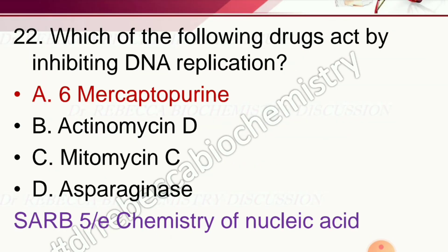Question 18: Which of the following drugs acts by inhibiting DNA replication? Options are 6-mercaptopurine, actinomycin D, mitomycin C, and asparaginase. The correct answer is 6-mercaptopurine.